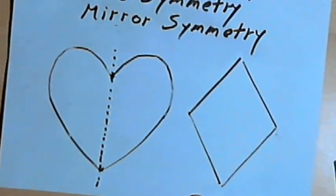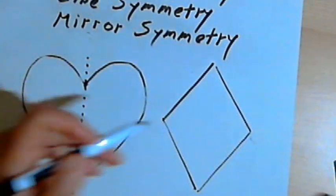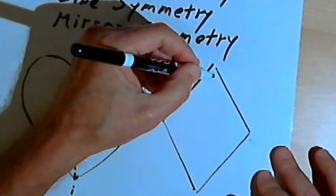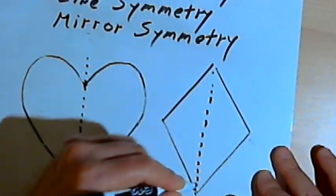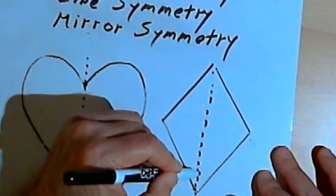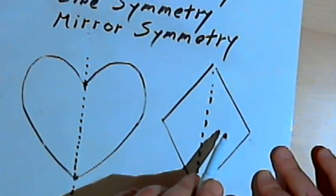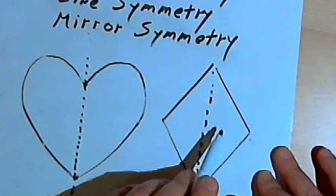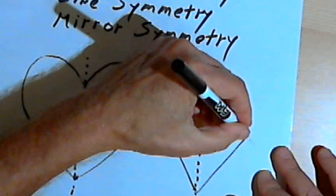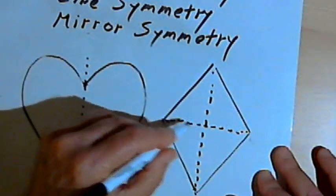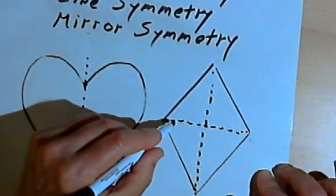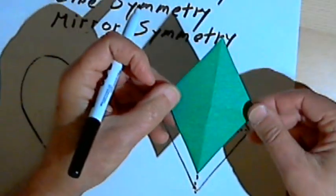Now you can have more than one line of symmetry. So I've got a diamond. If I draw a dotted line, a long one, to connect two opposite angles, I'm going to create two mirror images. On the other hand, I could have drawn a dotted line, a shorter one, connecting the other two opposite angles, and that would also create a mirror image.